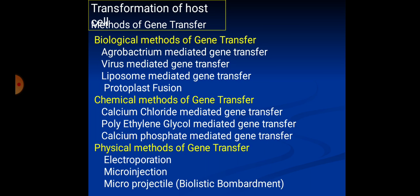Transformation of the host cell can be done by different methods. One method already discussed is calcium chloride-mediated gene transfer. Biological methods include agrobacterium-mediated gene transfer in plant biotechnology, virus-mediated gene transfer in plant and animal biotechnology, liposome-mediated gene transfer, and protoplast fusion. Chemical methods include polyethylene glycol-mediated gene transfer and calcium phosphate-mediated gene transfer.